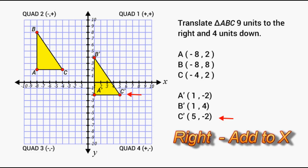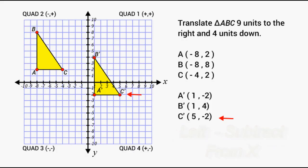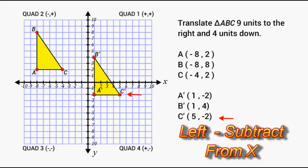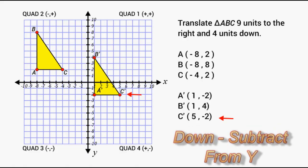So any movement to the right on the coordinate plane just means you're going to add something to the x value. Now if you were to move something to the left then you'd subtract that amount from your x value and any movement downward is a movement in the y direction and you would subtract from your y value.